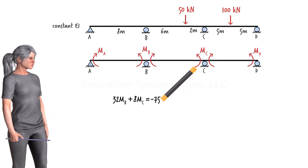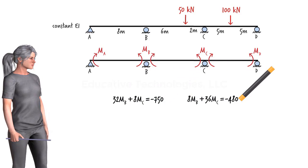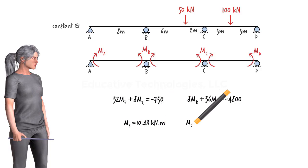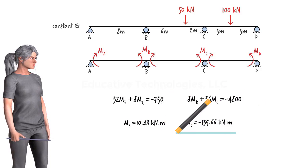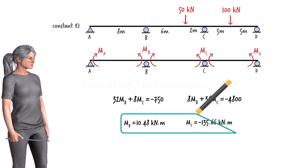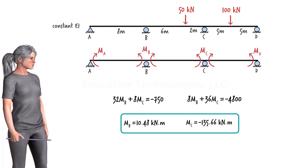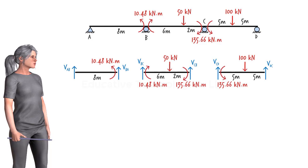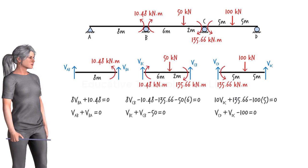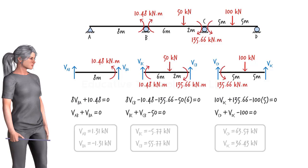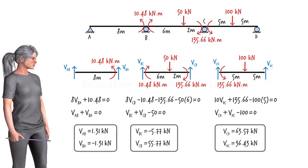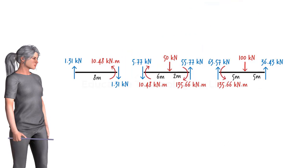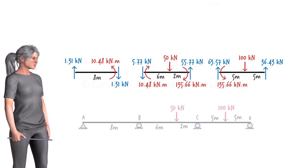Our two three-moment equations are shown. Solving them for the unknown moments MB and MC, we get the results. Knowing the internal moments at the joints of the beam, we can easily determine the member-end shear forces using the static equilibrium equations. Knowing the shear forces, we can then determine the beam support reactions.